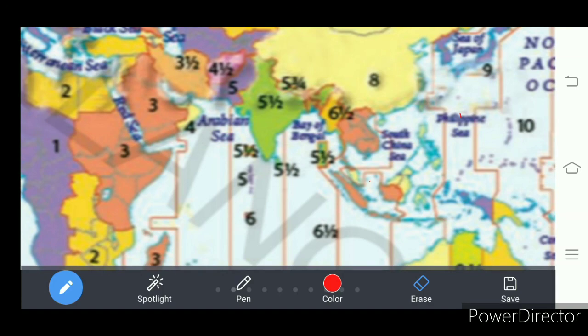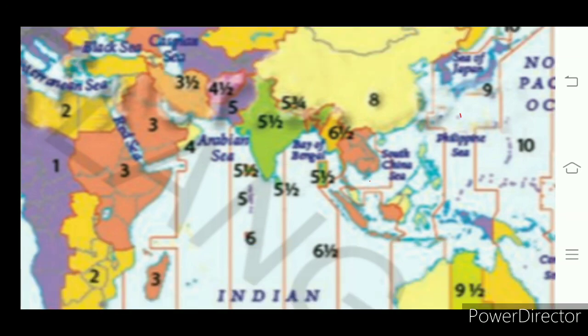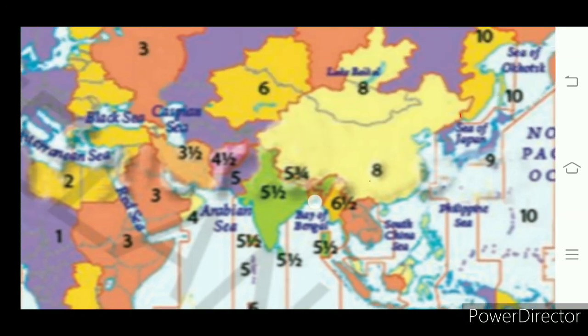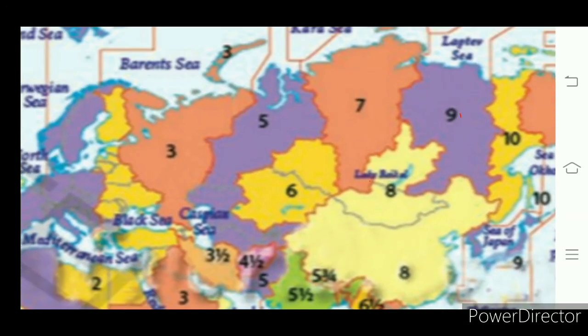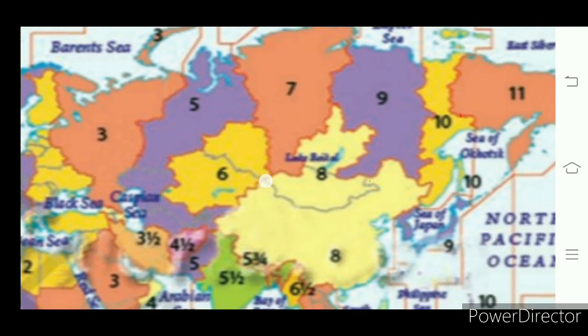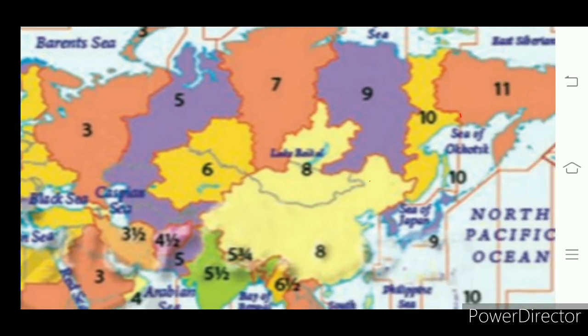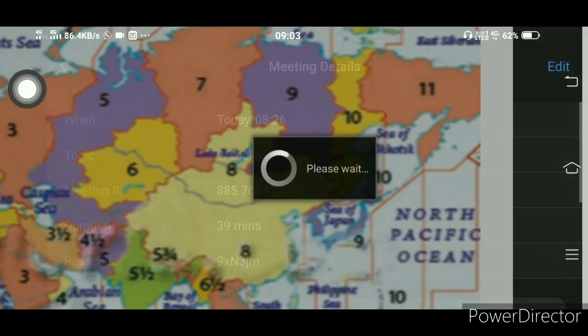So that 82 degrees 30 minutes east longitude is considered Indian Standard Time, to avoid time confusion. So in every country they have one specific longitude as their standard time. Russia, for example, is a very large country — in fact the largest country in the world — and several longitudes are passing through it.